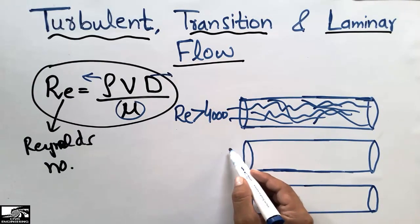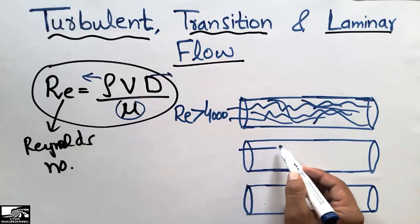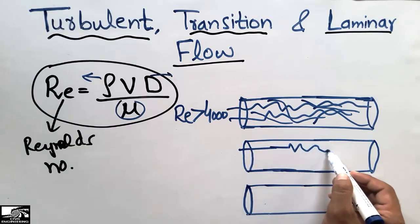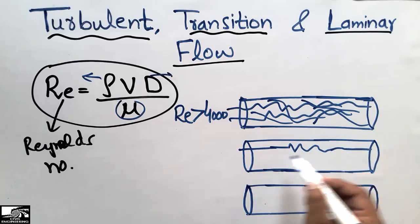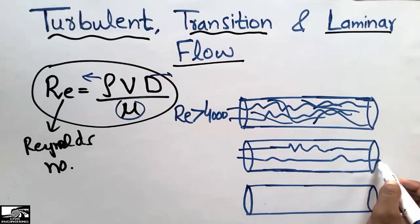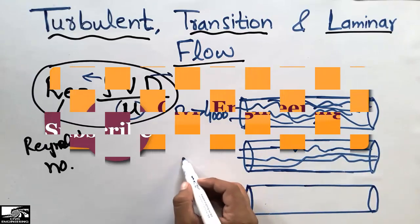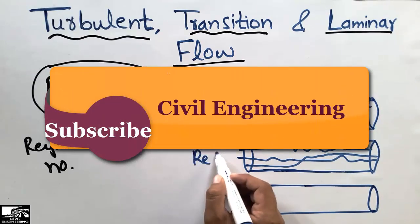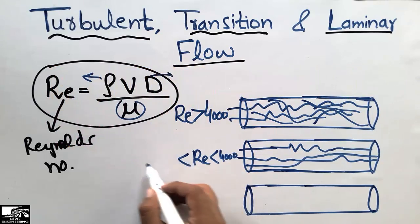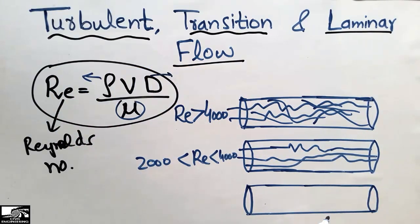The second type of flow is transition flow. In transition flow, the water particles move somewhat in a straight path and then somewhat in a random direction. This mixed behavior is what defines transition flow, and its Reynolds number is between 2000 and 4000.